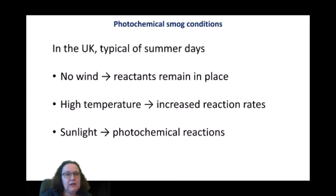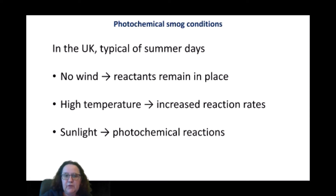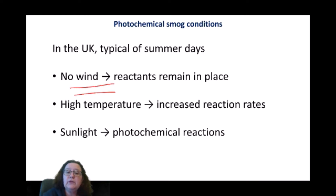We're going to be looking specifically into the conditions that facilitate the formation of an episode of photochemical smog. In the UK, photochemical smog episodes are typical of summer days because there is sunlight, which helps start all those photochemical reactions. Higher temperatures increase reaction rates, and especially when there is no wind, all the reactants remain in a particular area for several days. Sunlight and longer days mean there is more time for photochemical reactions to occur.